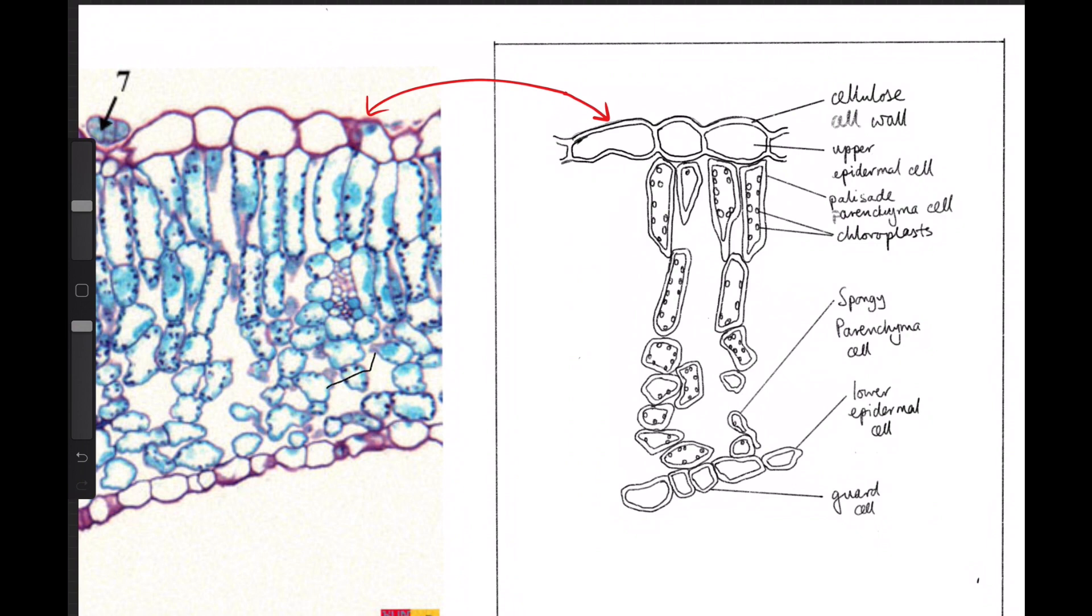Next, moving down. So we have the palisade, sorry, the parenchyma cells here or the palisade parenchyma cells up here, represented on the other side here.